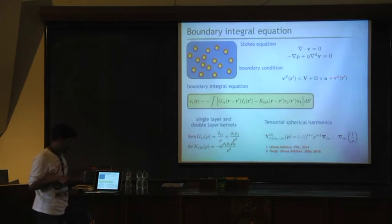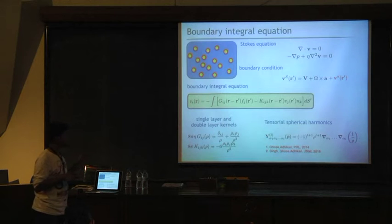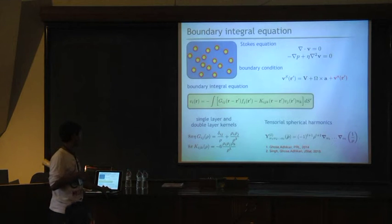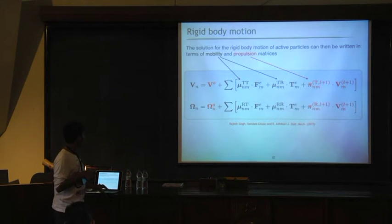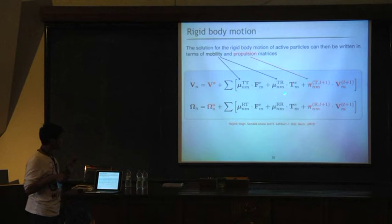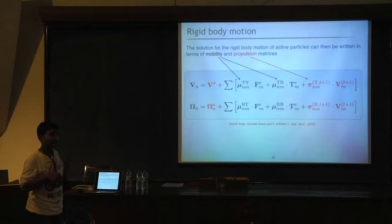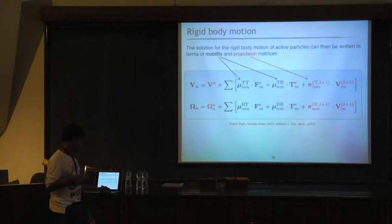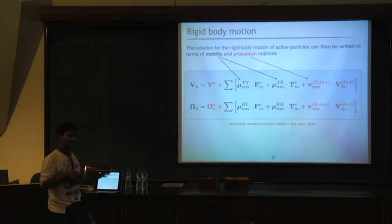The first one is Green's function and the second one is the stress kernel. Now what we will do, we will expand these two sources on top of tensorial spherical harmonics on the surface of the particle. The moment you will do so, you can write this integral equation in summation forms, in summation of different irreducible forms. If you do the math, you will get into the equations where you can say what is the propulsion velocity. Because of your classical mobility times force, mobility times torque along with newly found propulsion matrix times active velocity or active propulsion on the surface. This term is responsible for self-propulsion of the body, and this will take care of the hydrodynamics due to active motion.